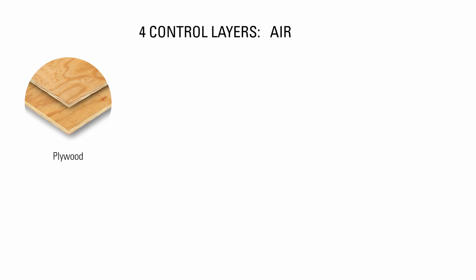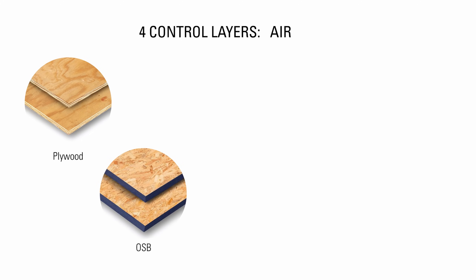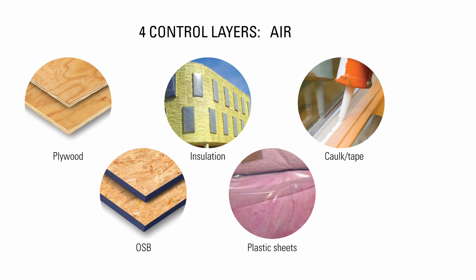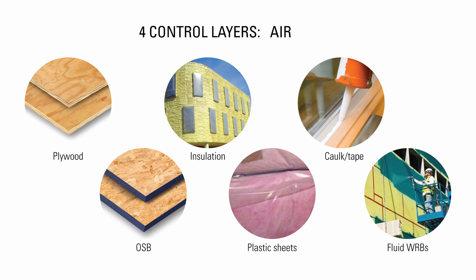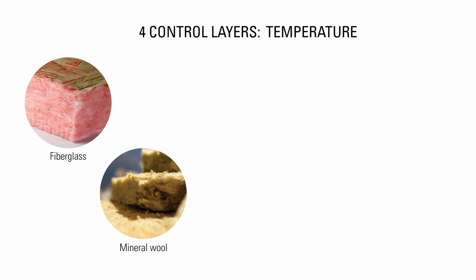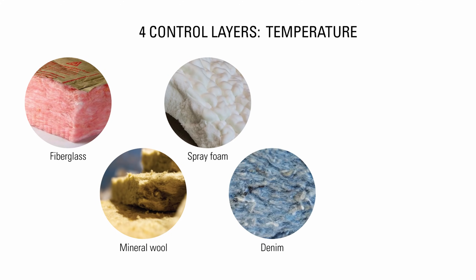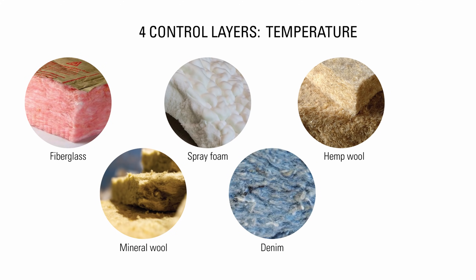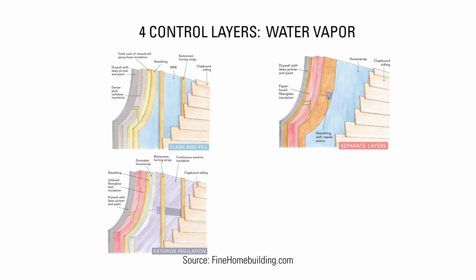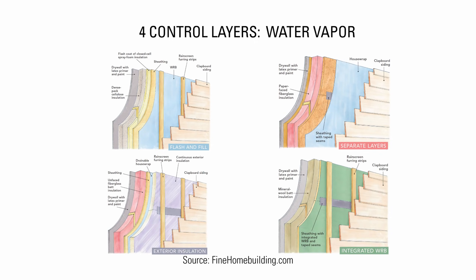The second is air, which is controlled with plywood or OSB sheathing, some types of insulation, plastic sheets, cork and tape and fluid applied weather-resistive barriers. The third is temperature, which is controlled with insulation like fiberglass, rock wool, spray foam, denim, hemp wool and cellulose. The fourth is water vapor, which is controlled by the arrangement of many material layers.